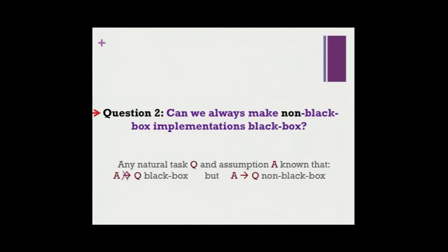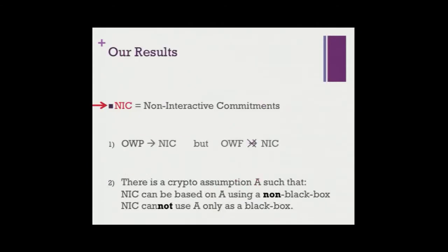These are the two questions we study in this work. Is it possible to always get rid of non-black-box use of primitives and make constructions black box? Or is there a case where non-black-box use of a primitive is inherently and provably more useful? Our results answer these two questions using a primitive from the title: non-interactive commitments, which I'll abbreviate as NIC.